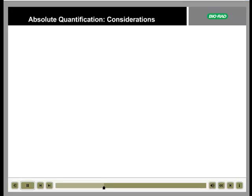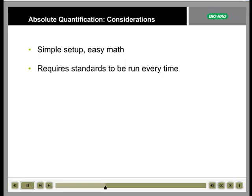The mathematics of absolute quantification are easy to perform. The method does, however, require a reliable source of a template of known concentration, and standards must be amplified in parallel with the samples every time the experiment is performed. This means that you must use some other method to measure the concentrations of your standards.